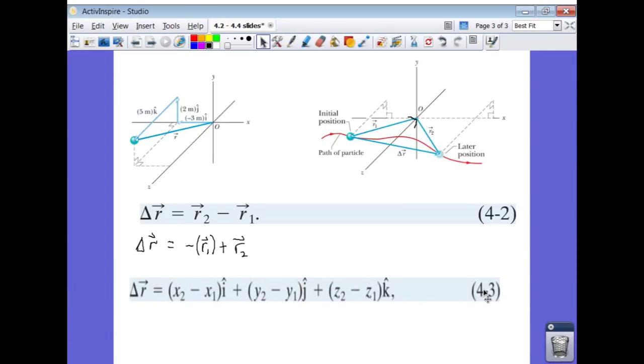And when we use our unit vector notation, we're going to align our x, y, and z components of each vector. And we're going to take the difference of the x components, the difference of the y components, and the difference of the z components, to get our answer for delta r.